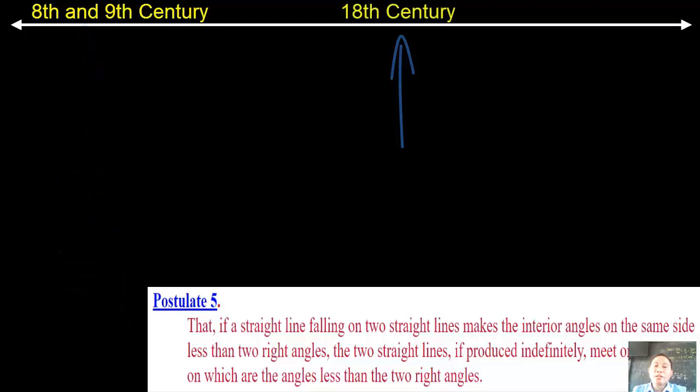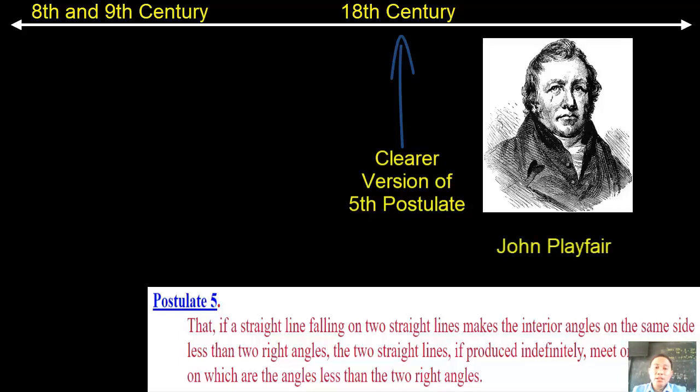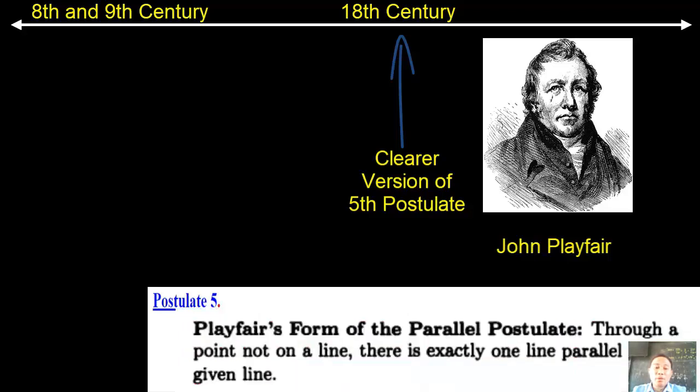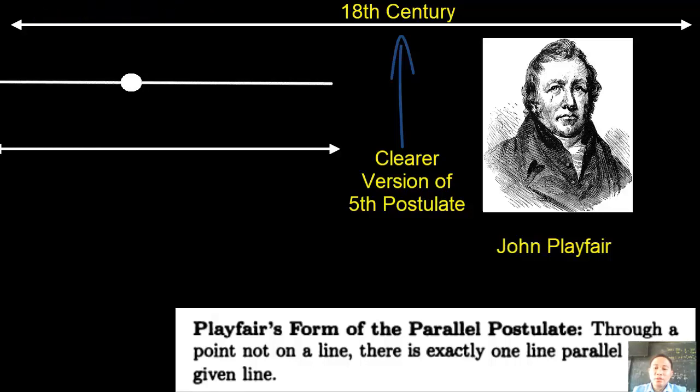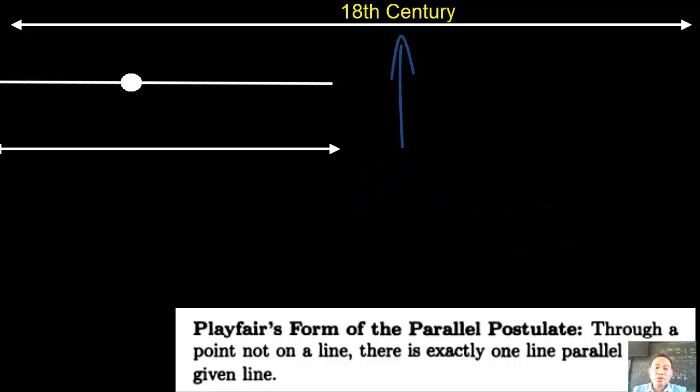As mathematicians were proving the parallel postulate, here comes the 18th century. Some proposed clearer versions of the postulate. The renowned was by a Scottish scientist, John Playfair, so it is known as Playfair's postulate. Playfair's form of the parallel postulate states that through a point not on a line, there is exactly one line parallel to the given line. There is a point and there is a line, so there's one line passing through the point that is parallel to the given line.